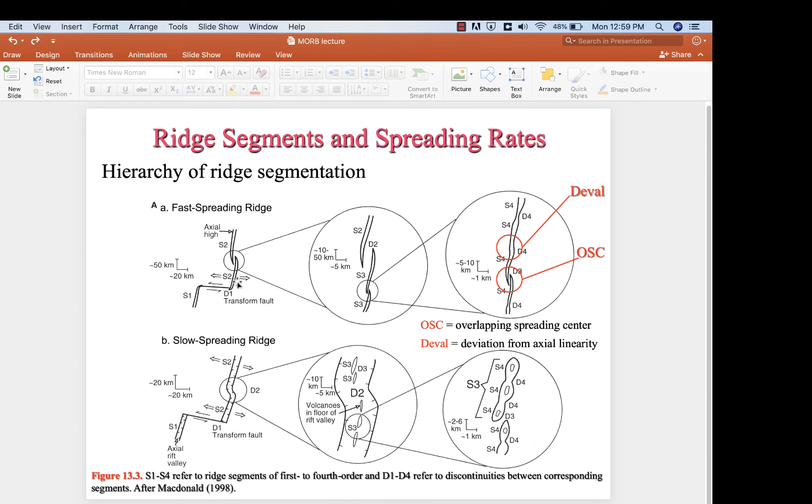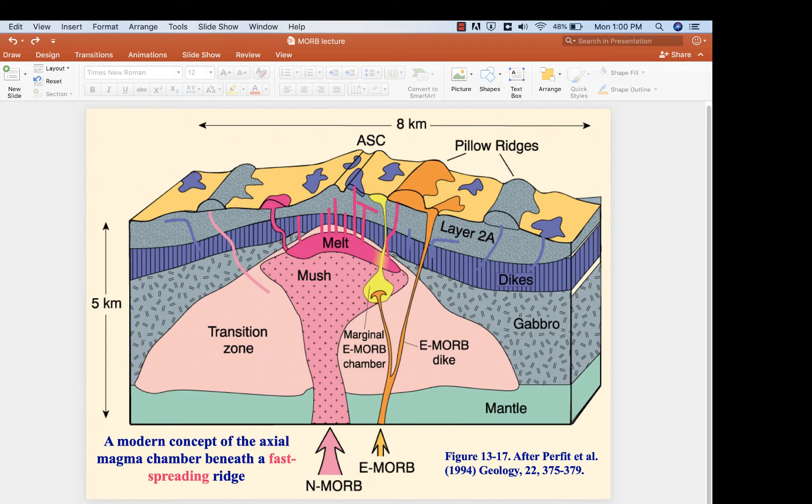This is how Mid-Ocean Ridges are drawn in map view. We have a spreading center here, and then it's offset by a transform fault, and it links up to another spreading center. And this is showing the same thing, a spreading center, a transform fault, another spreading center. Here the author is showing these things called devals, deviation from axial linearity. It's a bend in the ridge. They're not really very important unless you're actually doing research in these kinds of oceanic systems. So don't worry too much about that.